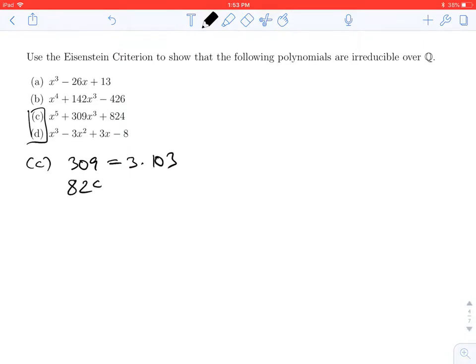For 824, you might notice 8 goes into 800 and 24, so 8 goes into 824 exactly 103 times. In fact, 103 is a common factor of both coefficients.